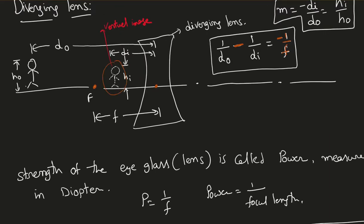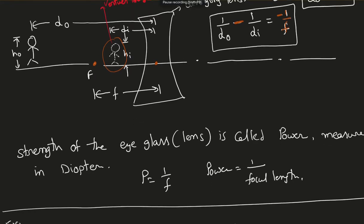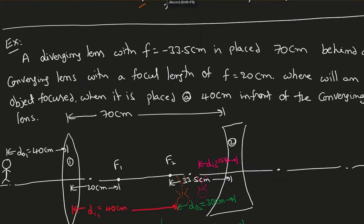The strength of an eyeglass or lens is called power, measured in diopters. The power formula is P = 1/F, where F is the focal length. Now I'm going to solve a couple of examples. Here is the first example: a diverging lens with a focal length of -33.5 centimeters.